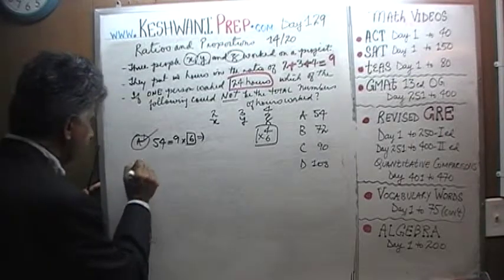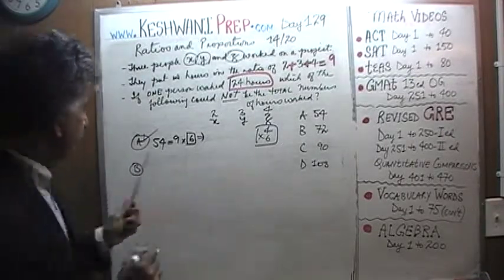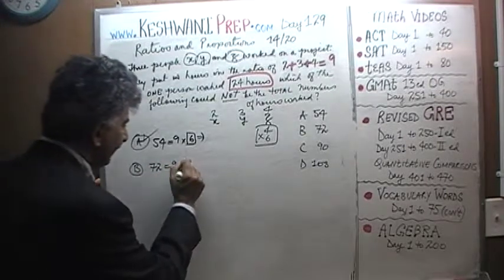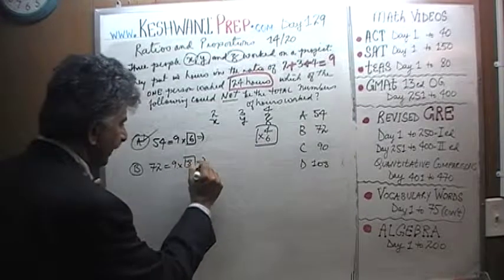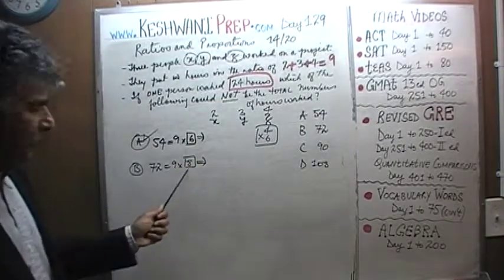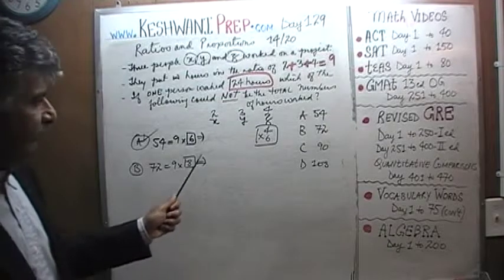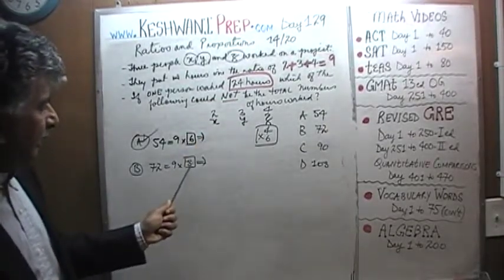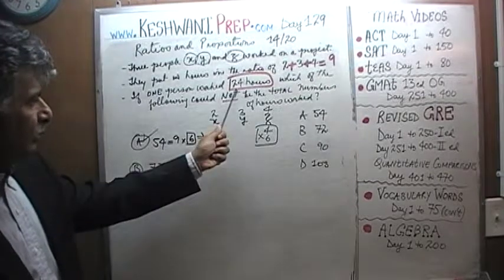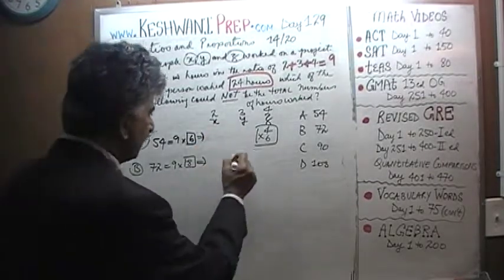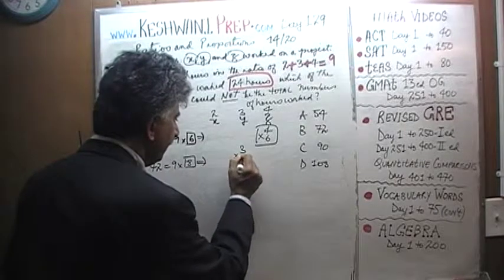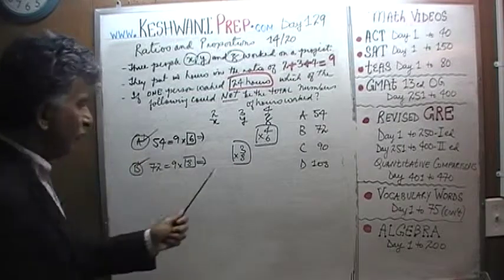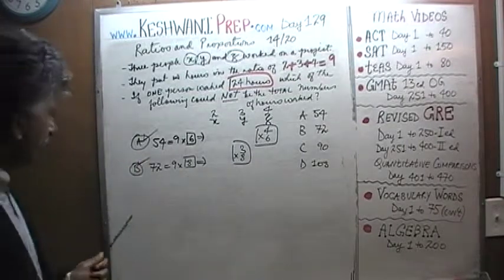Let's look at B. Answer choice B says 72. 72, of course, is 9 times 8. That implies that in order for this to be true, one person, and the fact that one person has worked 24 hours, we put the two together, we need 8 times 3 is 24, right there. Y must have worked 8 times 3 is 24. In this second scenario, in scenario B, it is Y who has worked 24 hours. Let's keep on going.